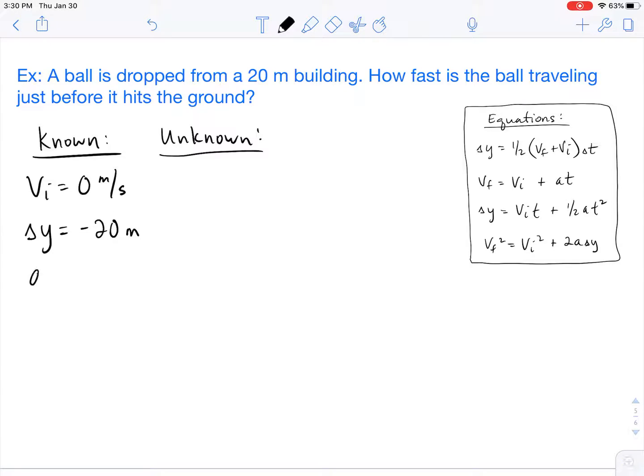As the ball falls, it falls in free-fall. We know that the acceleration in free-fall is that of gravity, so negative 9.8 meters per second squared. And then our unknown value here, since it's asking how fast just before it hits the ground, we are trying to find VF.